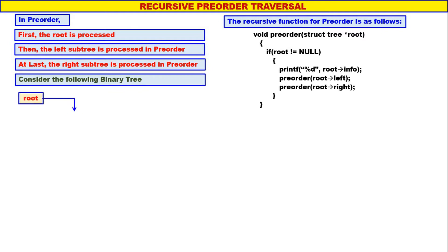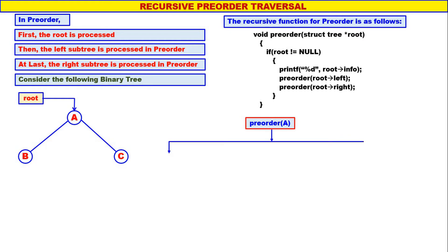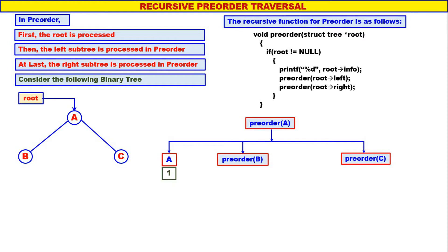Consider the following binary tree. A is the root of the tree, therefore we call pre-order of A. A is not equal to null, therefore display A — print A. Left of A is B, therefore again we call pre-order for B. Right of A is C, therefore again we call pre-order for C. A is the first one to be displayed.